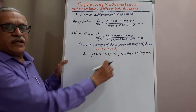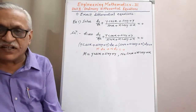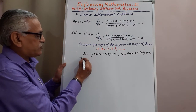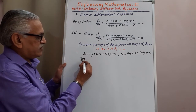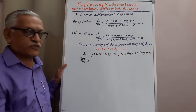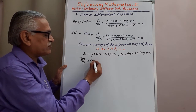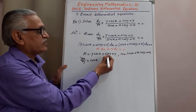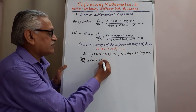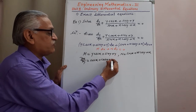Here both M and N are functions of x and y. To check whether it is exact or not, we find the partial derivative of M with respect to y, keeping x constant. Differentiating each term: derivative of y cos x is cos x, derivative of sin y is cos y, and derivative of y with respect to y is 1.